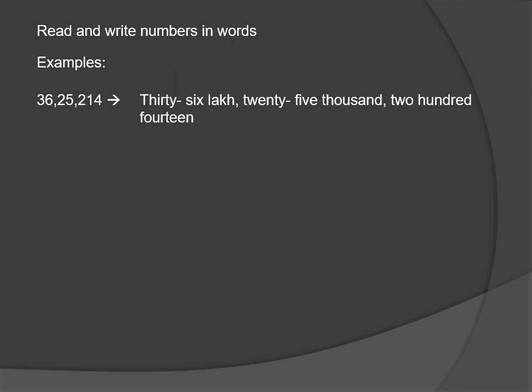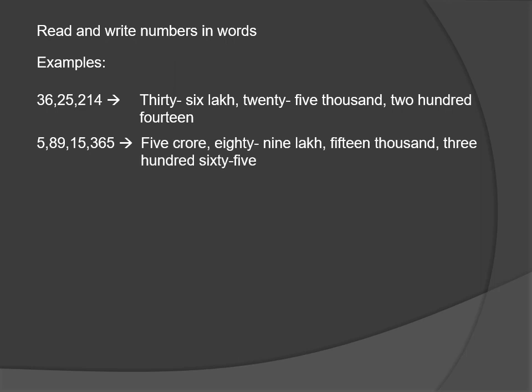Look at the second example. Observe the periods and commas. From the right, there are ones, thousands, lakhs, and crores periods. Reading from the left: there is 5 in the crores place, so 5 crores; 89 in the lakhs place, so 89 lakh; 15 in the thousands place, so 15,000; and 365 in the ones place. So we write it as 5,89,15,365.